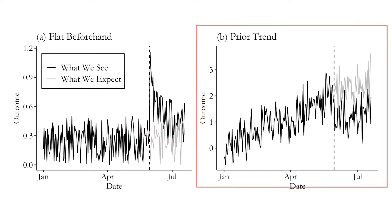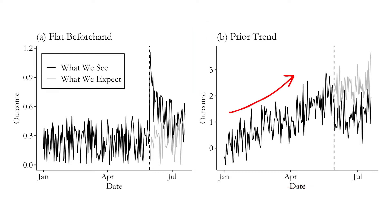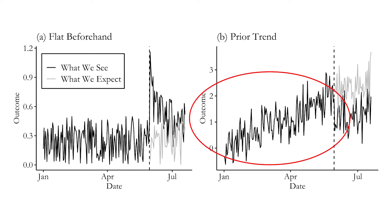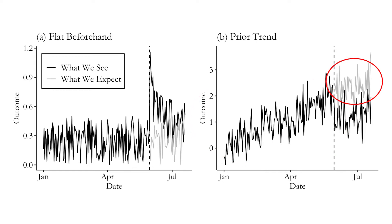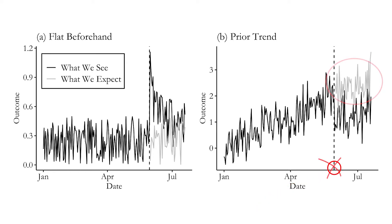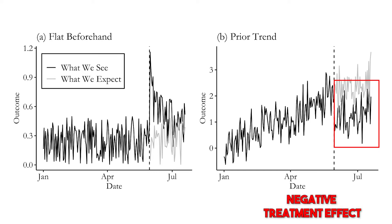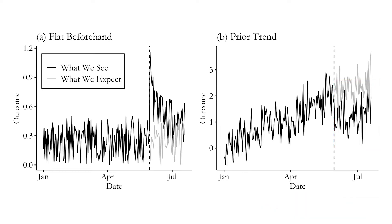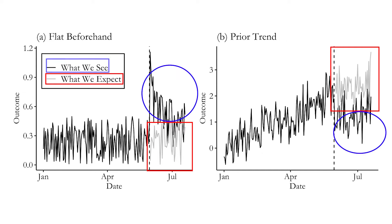On the right graph, we see an upward trend over time — there are day-to-day jumps but things are clearly climbing. We would have expected that climb to continue after treatment went into effect. So when treatment occurs, we expect the prior upward trend would have continued on its merry way. But instead, the actual outcome drops, which does not match the trend we saw before, suggesting a negative treatment effect. In both cases, we use what we saw before treatment to make a prediction — shown in the lighter color — about what would have happened after, and we compare what we actually see to that counterfactual prediction. That's the basic idea of how event studies work.